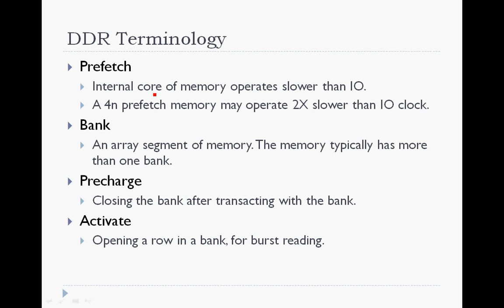Bank: a memory is typically broken into an array of memory chunks. These are quasi-independent and help improve the bandwidth of transactions on the memory. The more banks a memory has, the more efficient transactions can get. Precharge: closing the banks after transacting with the bank is called precharge. Activate: before a transaction can happen in a DRAM, a row must be opened. Activate is the action of opening a row for a transaction.